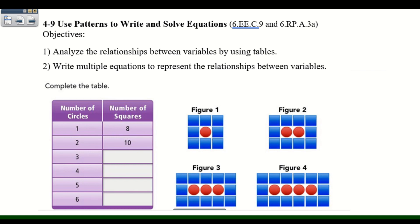So we have here a table showing the relationship between circles and squares — the number of circles versus the number of squares. We see the relationship right here in figure one: we have 8 squares to one circle, so we put that in the table: 8 and 1.